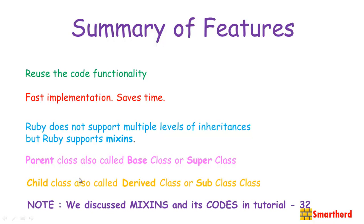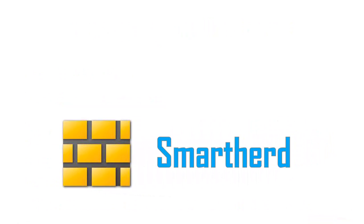To recap: the parent class is also called base class or superclass; the child class is also called derived class or subclass. This was all about the basic concept of inheritance in Ruby. In the next tutorial I will start coding with inheritance in Ruby with a practical example. Please don't forget to subscribe — this is Shakes signing off.